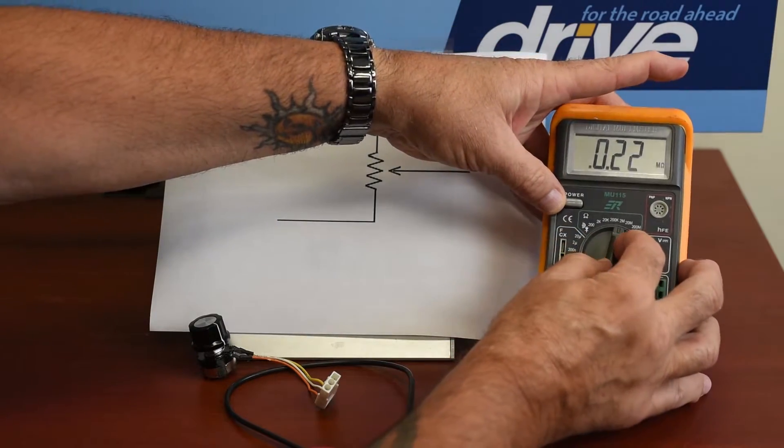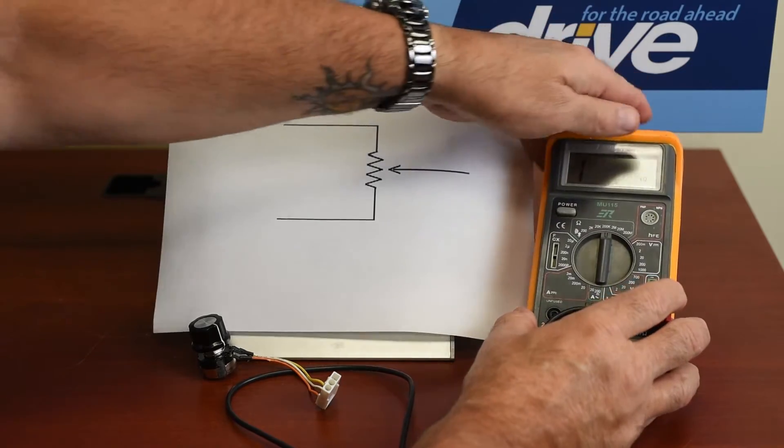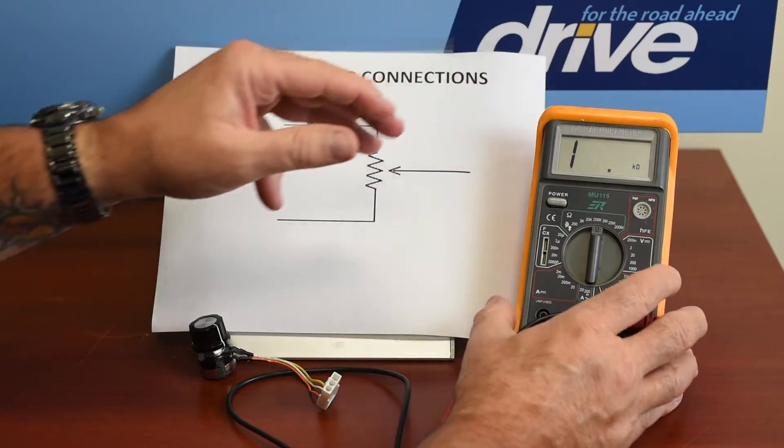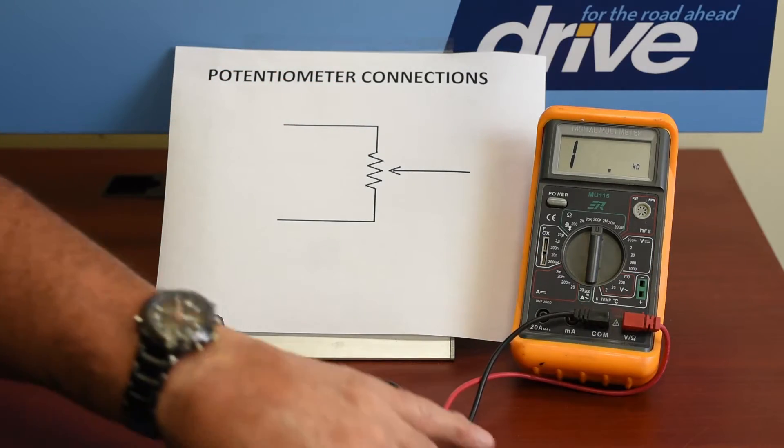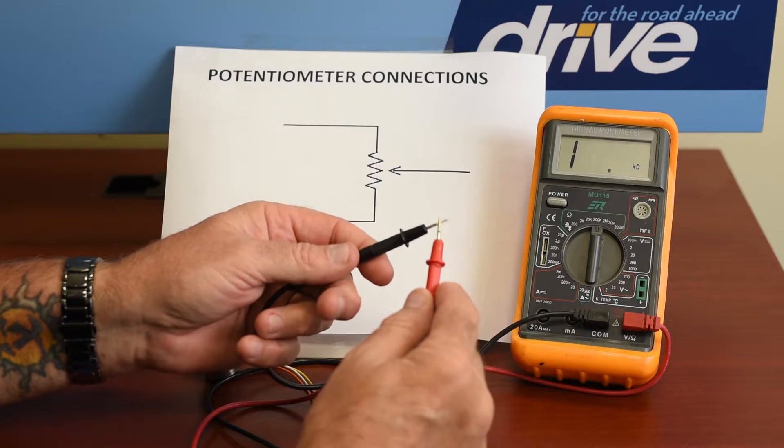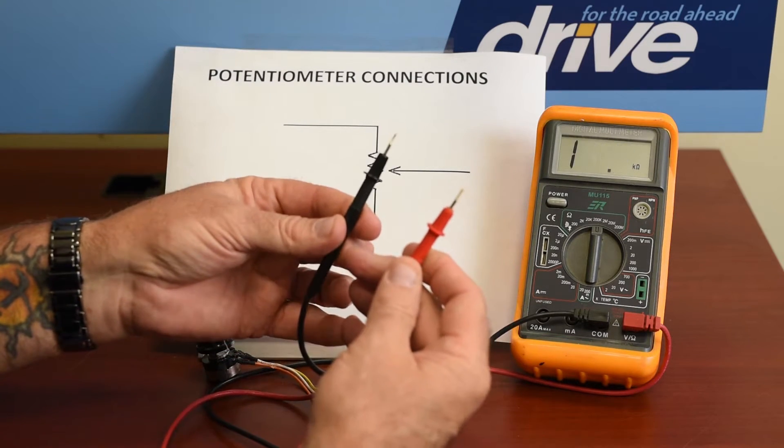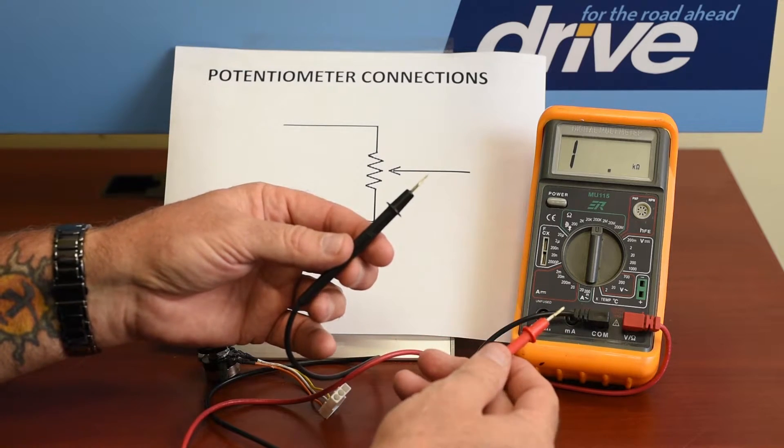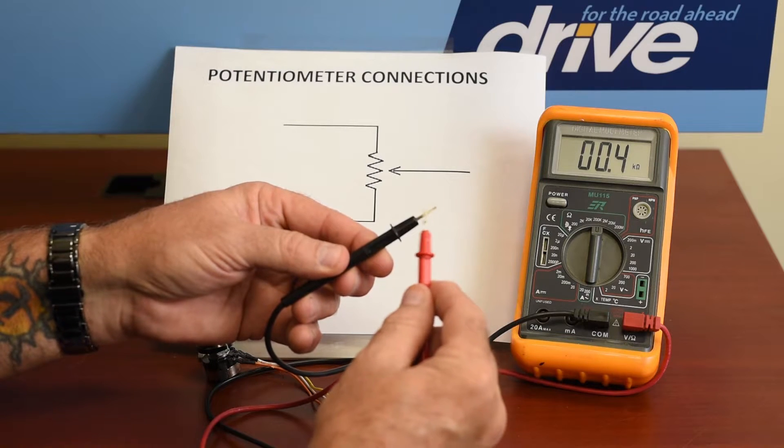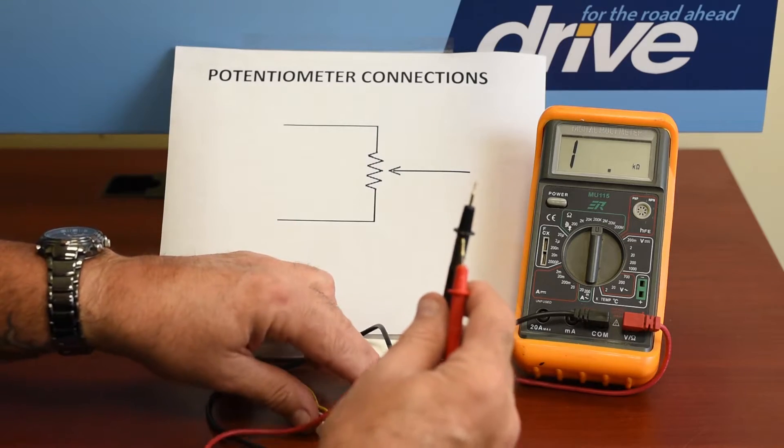So we'll swing around to the 200k pot, and you notice that it's showing infinity on the scale because it's not attached to anything. And the first thing we always do is touch the leads together to make sure that it goes to zero. That shows us that our meter is working, it's on the correct scale and correct function of the scale, and the wires are working.